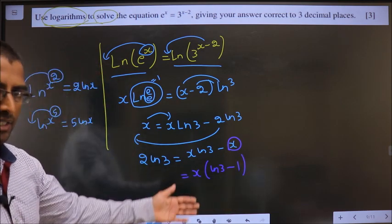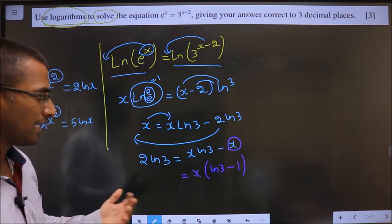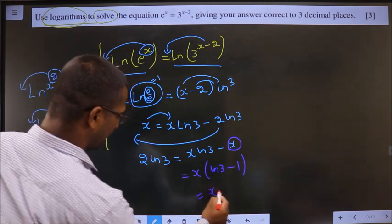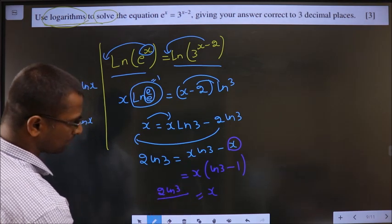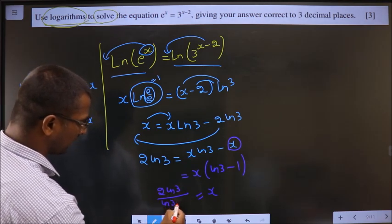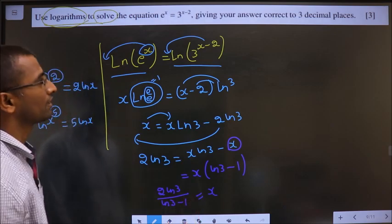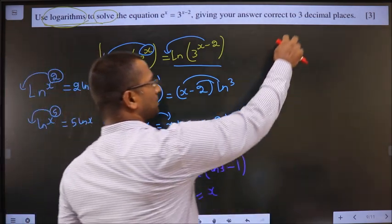I want x. So send the entire bracket to the other side. So that is 2 ln 3 by ln 3 minus 1. They are asking us up to 3 decimal.